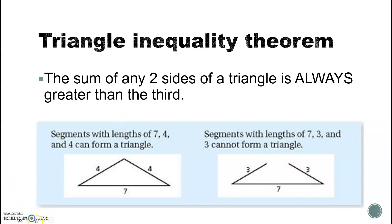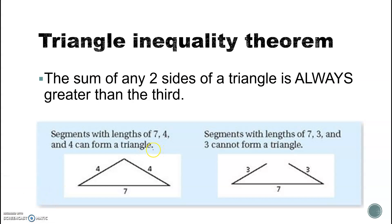The next concept is the triangle inequality theorem. If I give you three sides, you can't always make a triangle — there are requirements. The sum of any two sides must always be greater than the third side for it to form a triangle. For example, four plus four is eight, which is bigger than seven; four plus seven is eleven, which is bigger than four.